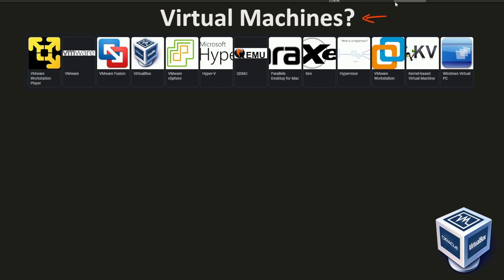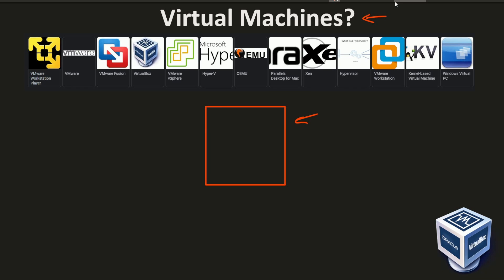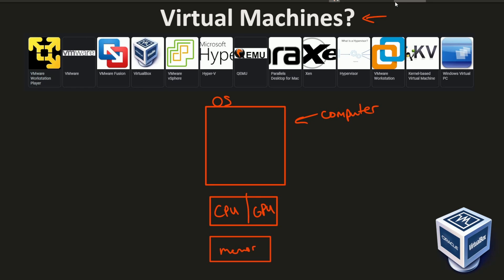So first off let's define how a virtual machine can exist. If you have a computer, inside of your computer you have an operating system, short for OS, that runs all the background processes and allows access between your computer and the hardware that it has, such as the CPU, GPU, memory, and all the other layers that communicate between our operating system and us.